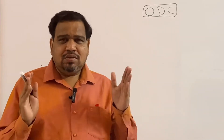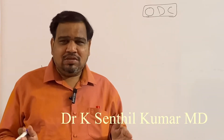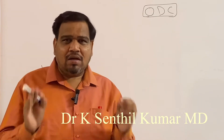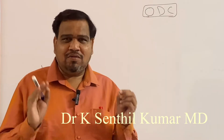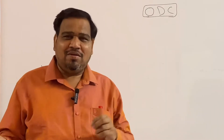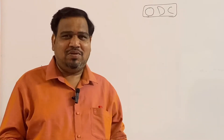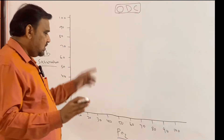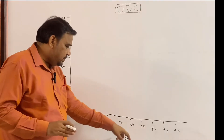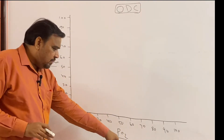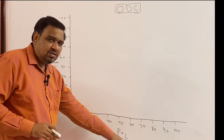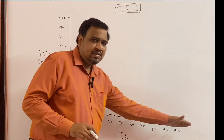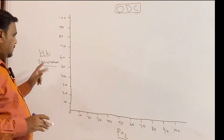Good afternoon students. Today I am going to discuss about how to draw the correct oxygen dissociation curve, which many students are not able to draw. The oxygen dissociation curve is the relationship between partial pressure of oxygen, which is drawn on the x-axis, and hemoglobin saturation on the y-axis.